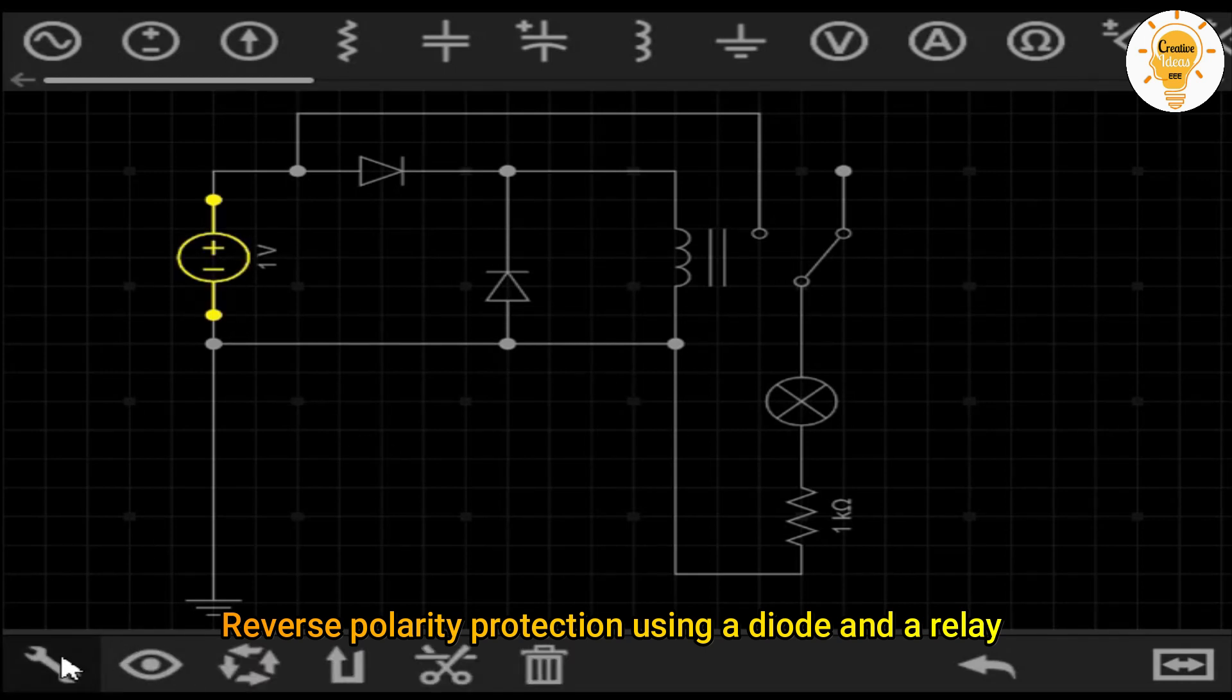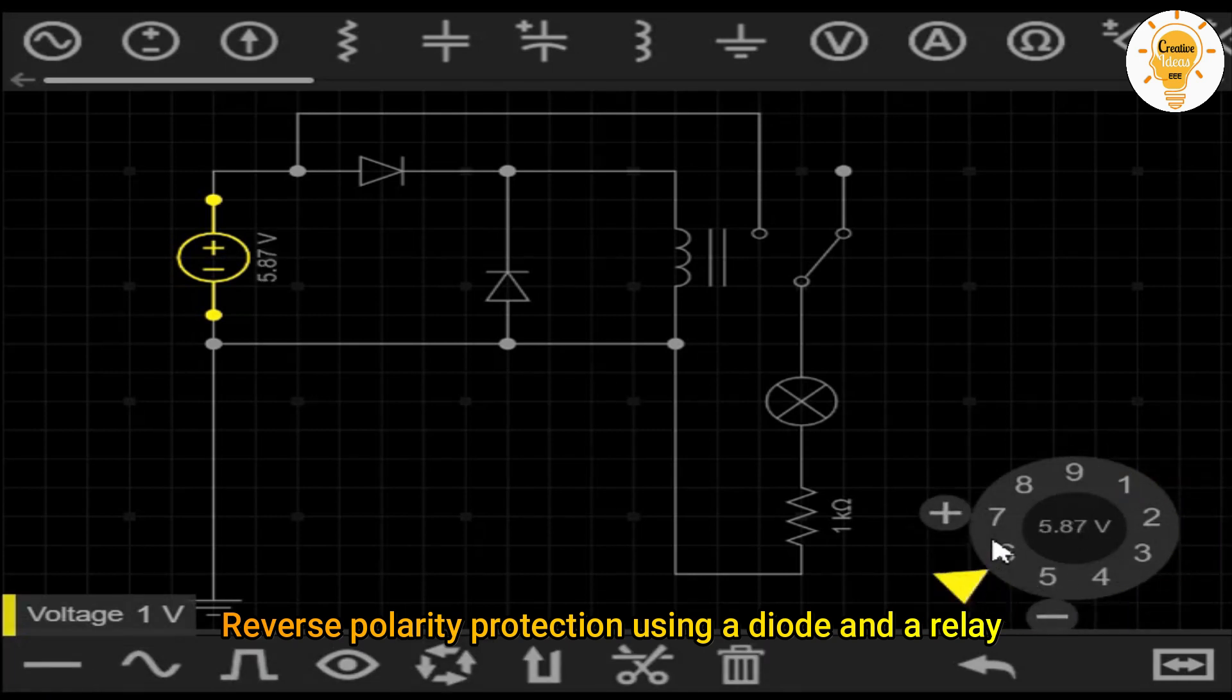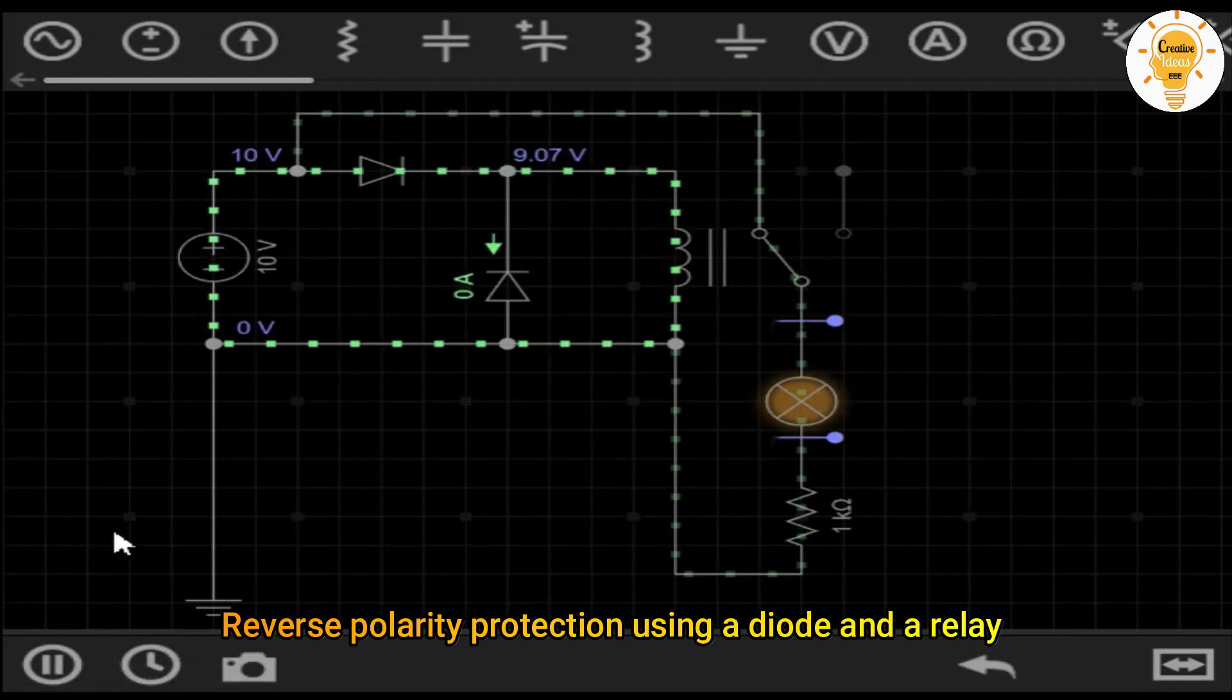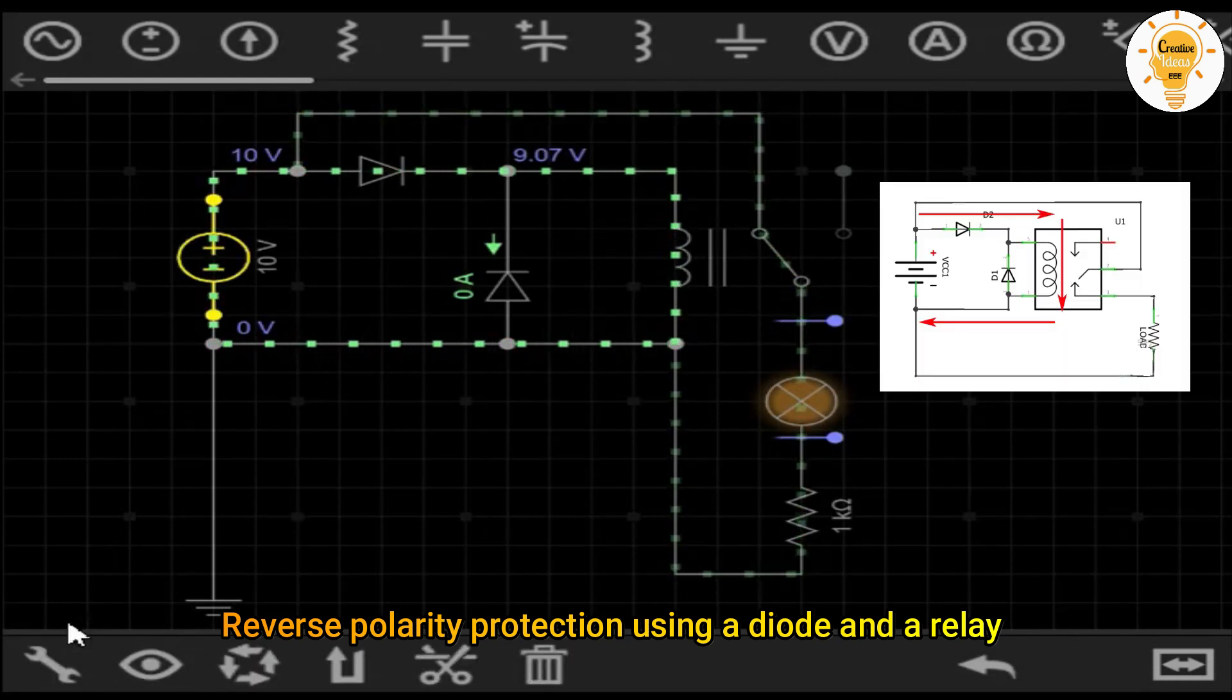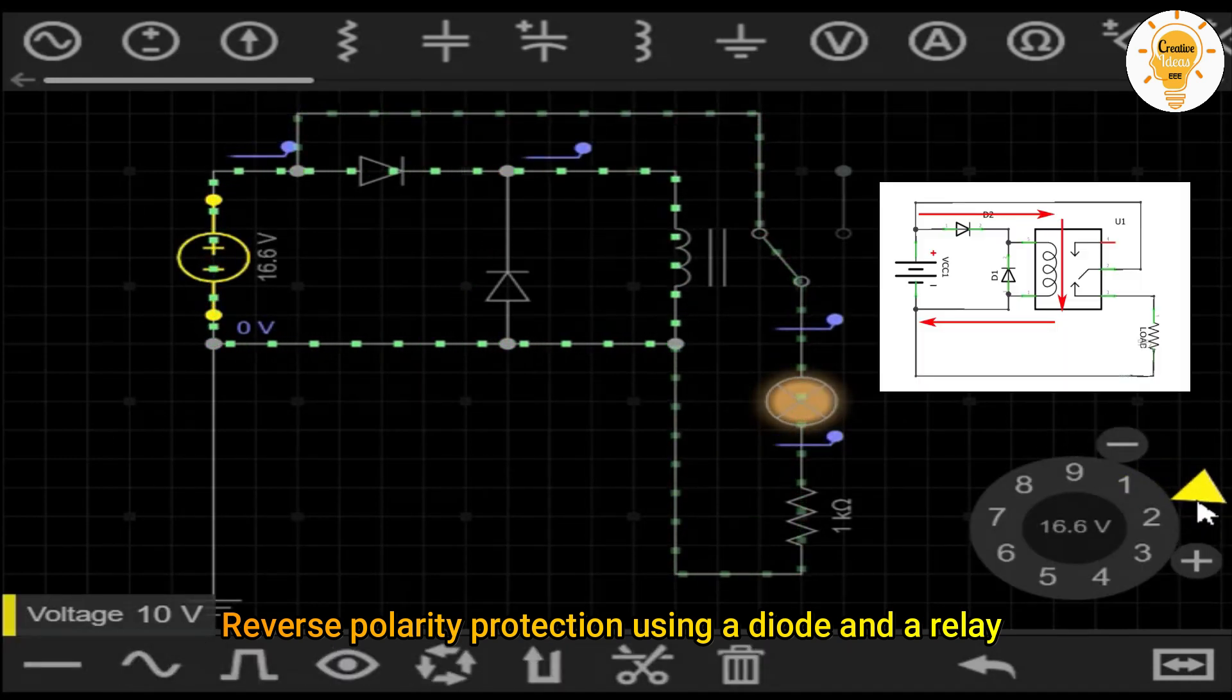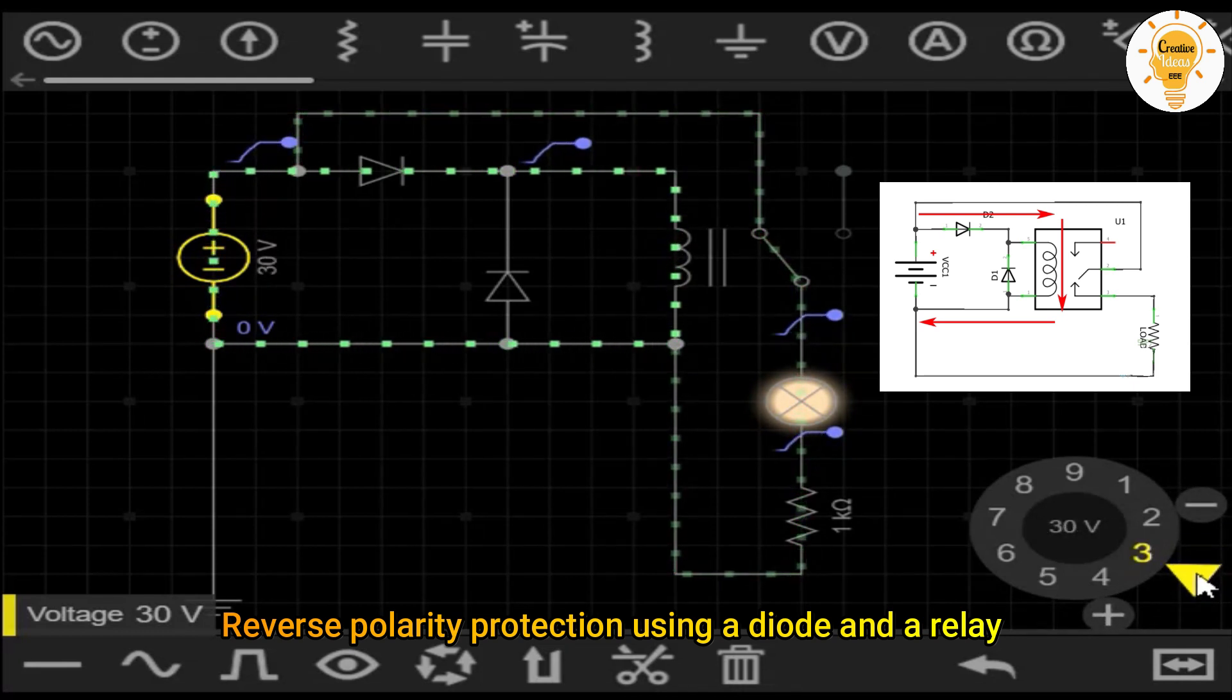When we connect the source correctly, the diode circulates the current as it is directly polarized. This activates the relay, which closes the contacts and allows current to flow to our load.